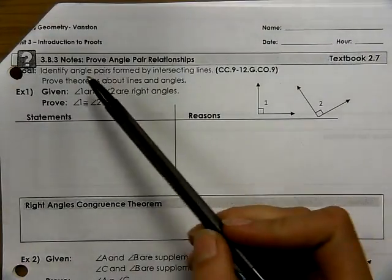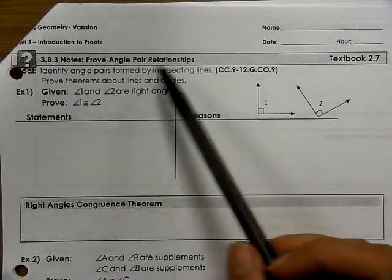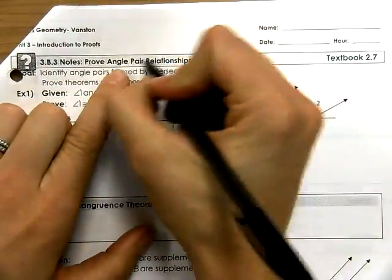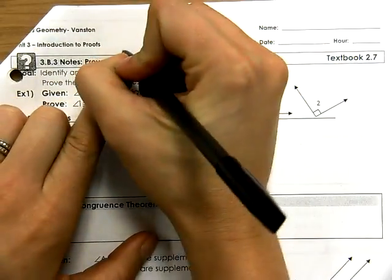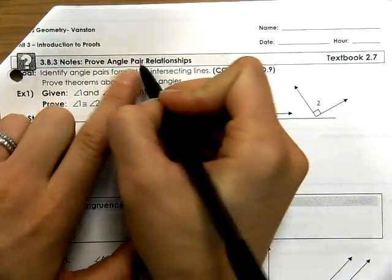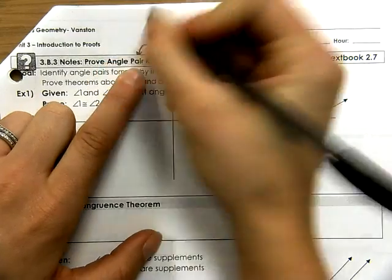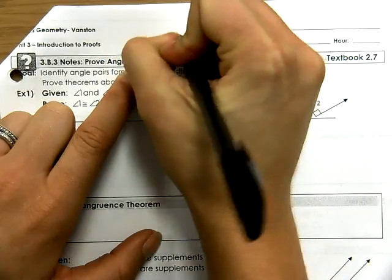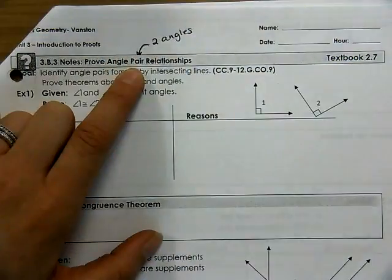Today's lesson is 3B3 notes, and we're going to be talking about angle-pair relationships. So angle-pair relationships — the fact that we're dealing with angles, but 'pair' meaning two angles. So the relationship between two angles.